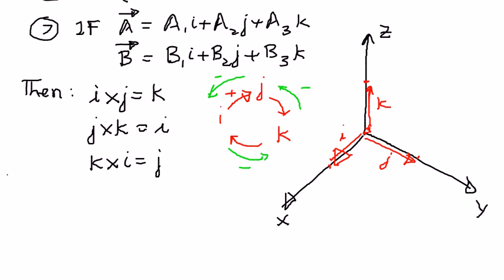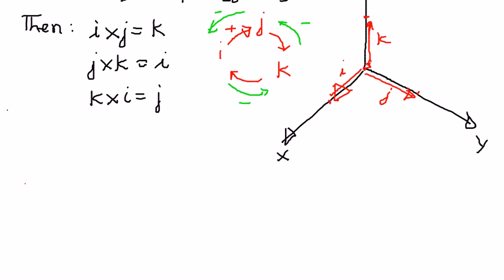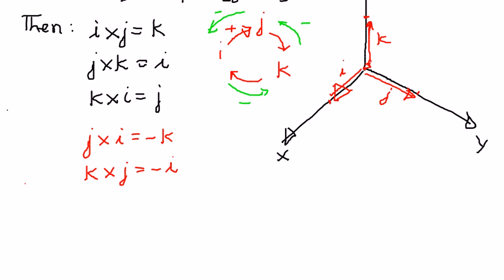So, j cross i is the opposite of k, which is negative k. Since j cross k equals positive i, then k cross j will be the opposite of i, which is negative i. And since k cross i equals positive j, then i cross k will be negative j.